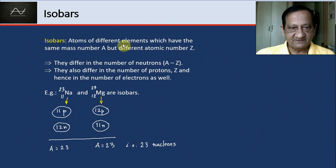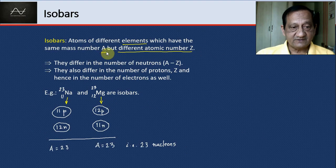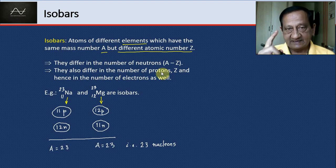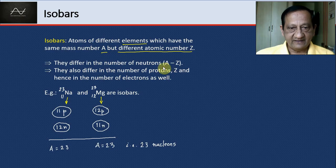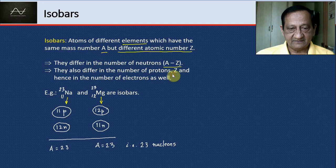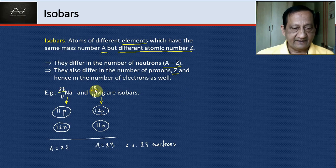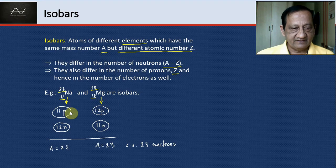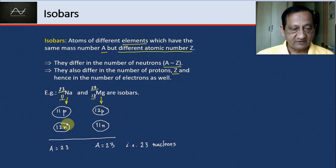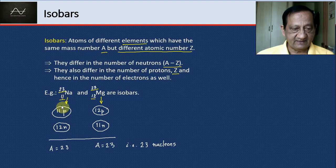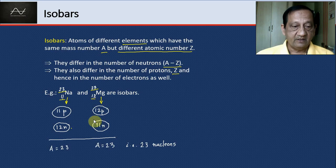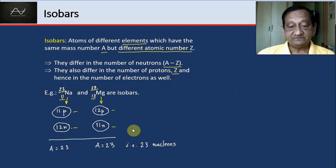What are isobars? Atoms of different elements—different Z—but the same mass number A. They differ in A minus Z and also in Z and therefore the number of electrons. Take an example: 23, 11 sodium and 23, 12 magnesium. The A is the same, but Z is different. Number of protons in sodium is 11, in magnesium is 12, and A is the same. So number of neutrons is 12 in sodium and 11 in magnesium. Number of protons and neutrons are both different, but their sum is the same—that's an isobar.